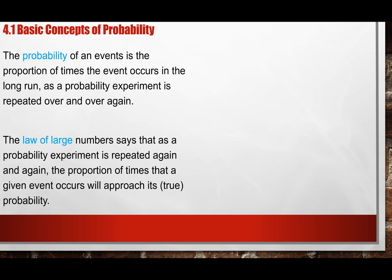Going back to the law of large numbers — if you do an event over and over many times, it will come out to be the true probability. For example, a coin flip is 50/50. If you flip two or ten times, you might not get exactly five heads and five tails — you might get seven and three, or eight and two. But if you flip a thousand times, you might get 550 and 450, which is close to 50/50. The law of large numbers says if you flip a million times, it will probably turn out to be 500,000 and 500,000.